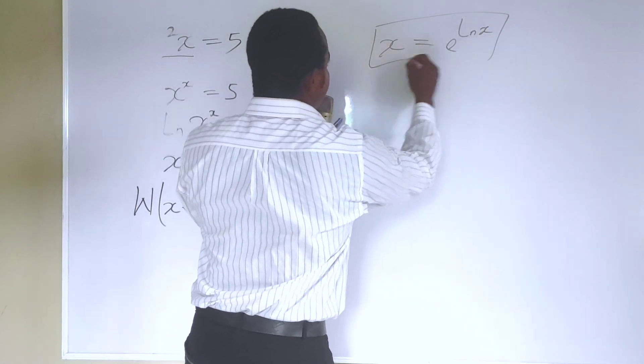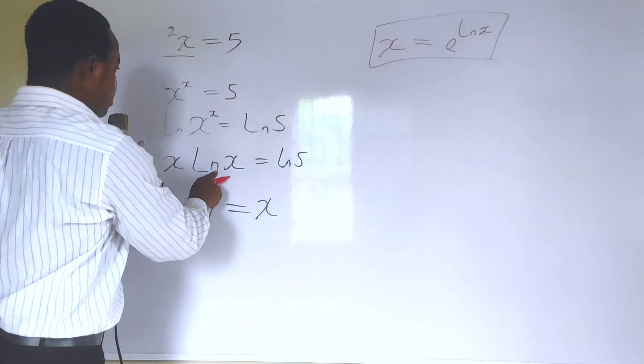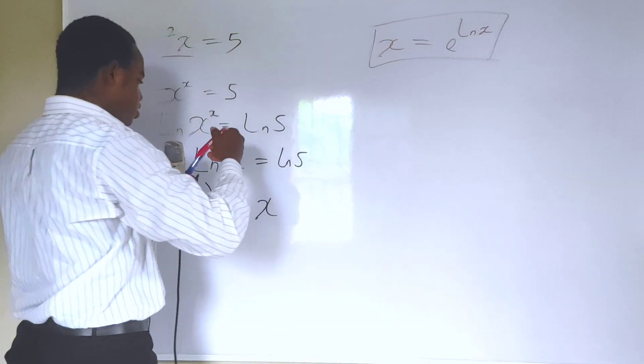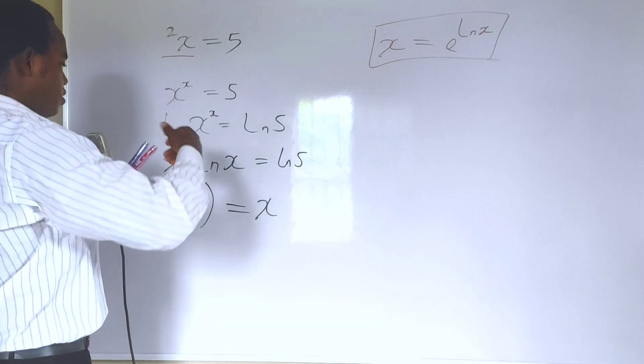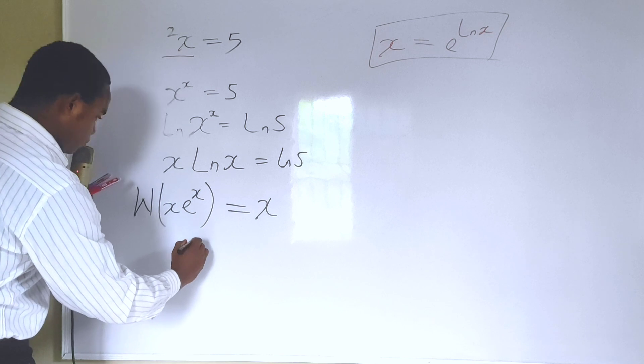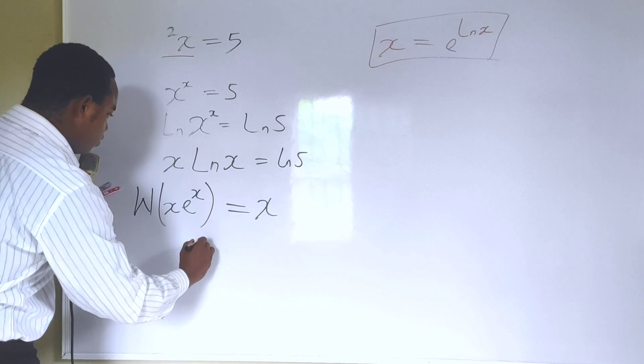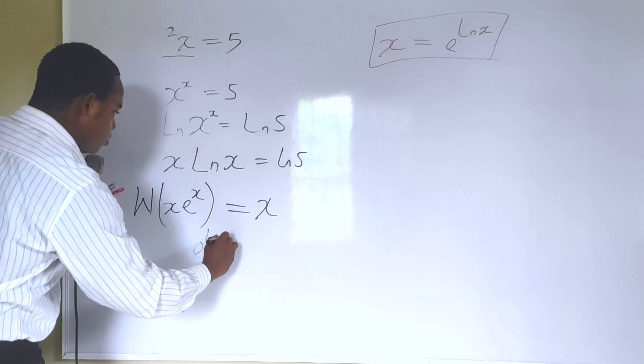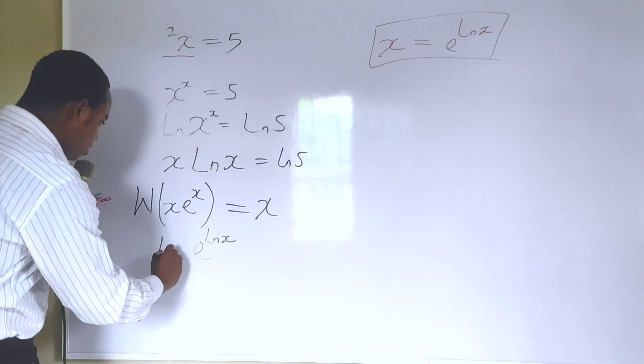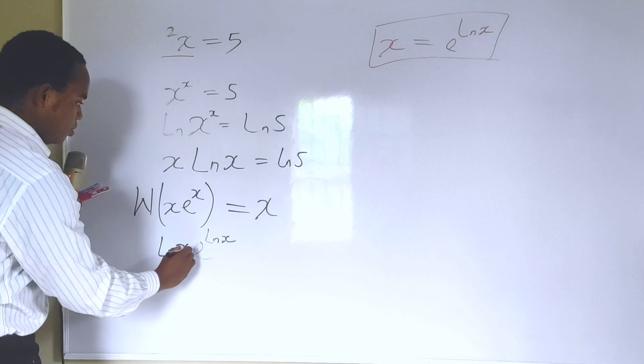Therefore, I'm replacing the x I have here with e to the natural log of x. And by so doing, this becomes e to the natural log of x. And I have natural log of x here already, so I'm putting natural log of x and multiply it.